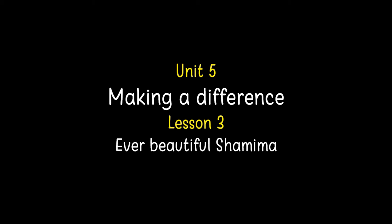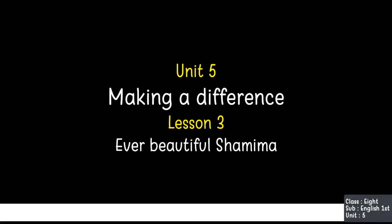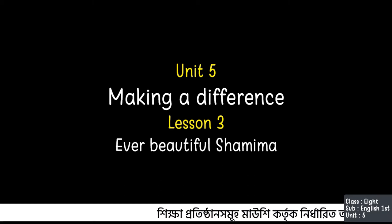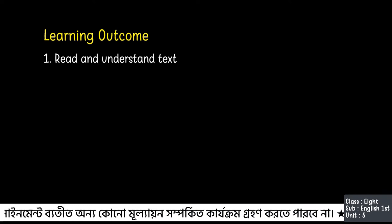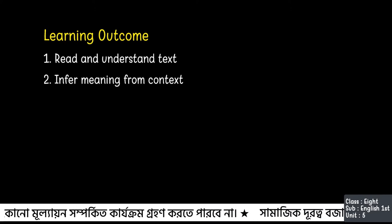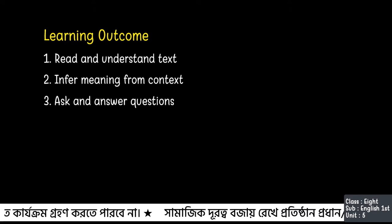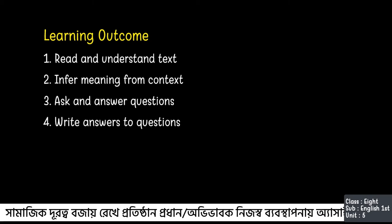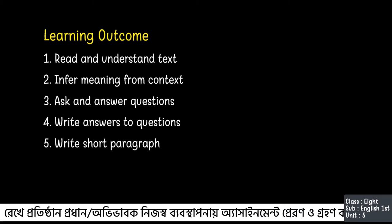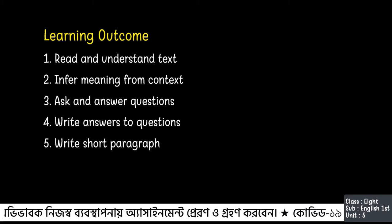Today we are going to discuss about Unit 5, Lesson 3 from your English for Today book. You can see the title of today's lesson on the screen: Making Difference, Ever Beautiful Shamima. After the discussion of today's class, we will be able to: number 1, read and understand text; number 2, infer meaning from context; number 3, ask and answer questions; number 4, write answers to questions; and number 5, write a short paragraph.